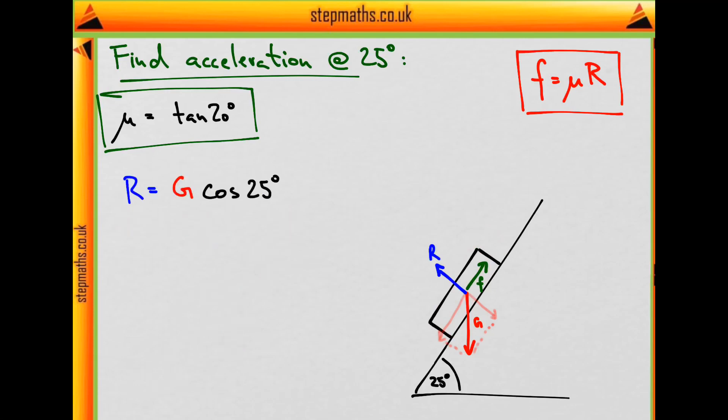So the reaction force is the force of gravity times the cosine of 25 degrees. And to get friction, we need to multiply by this coefficient which we have found. So force of friction equals force of gravity times cosine 25 times tan 20. I'll start calling this projection P, just for clarity. And P is now the force of gravity times sine of 25.